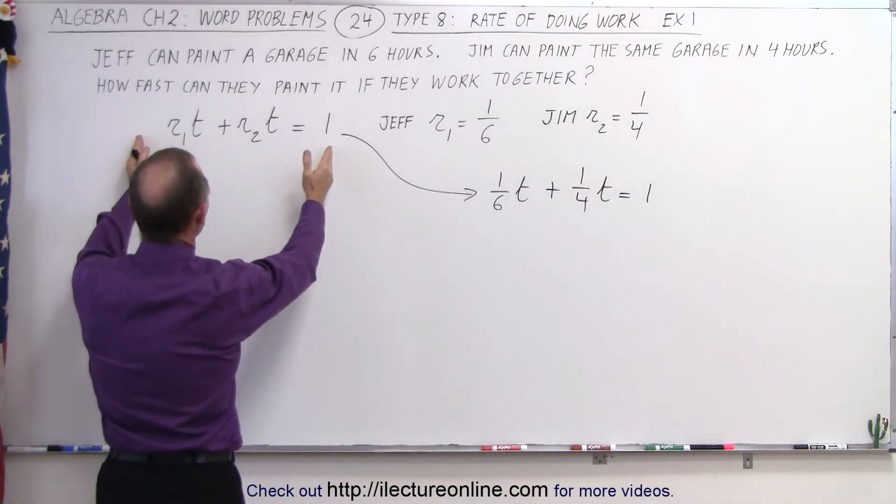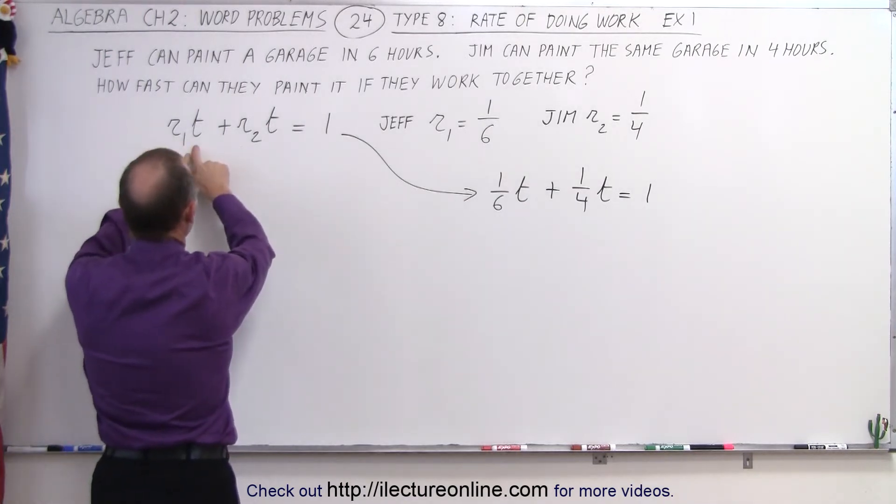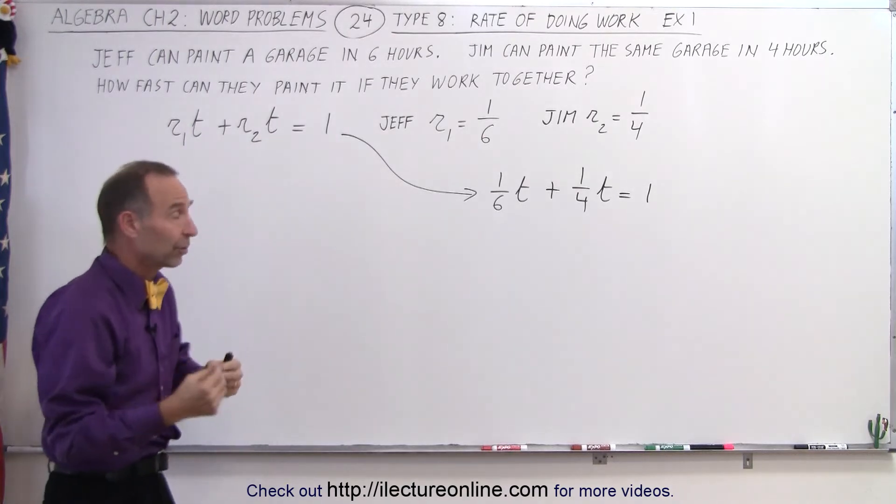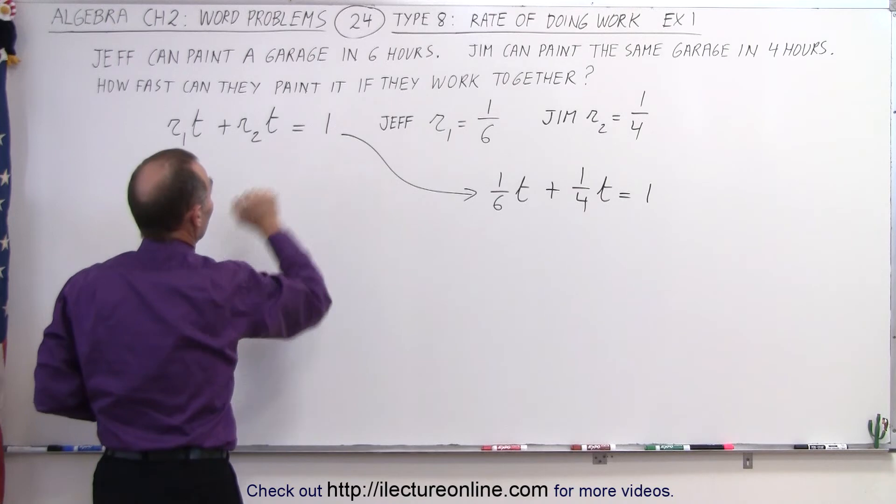You come up with the equation, the rate times time for the first person, plus the rate times time for the second person. It'll be the same amount of time because they're working together, and that will equal the whole job done.